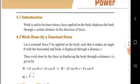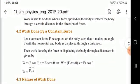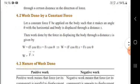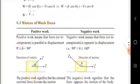Work done by a constant force: let a constant force F be applied on the body such that it makes an angle theta. Then W is equal to F cos theta times S, which gives us W = Fs cos theta. So W is equal to F into S.